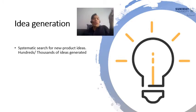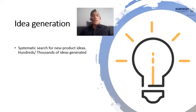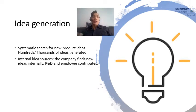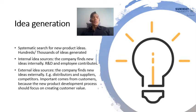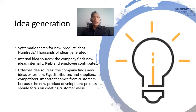In idea generation, we begin by understanding what product ideas we can search for from the hundreds and thousands of idea generations that will make up a new product. Product ideas can come from internal idea sources, where the company finds new ideas from their own employees and R&D, or from external idea sources like distributors or suppliers who tell them what the consumer wants, or even from competitors whose ideas they can improve upon.